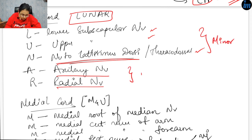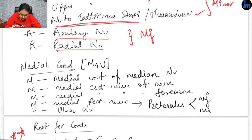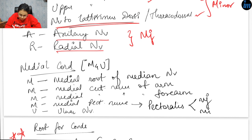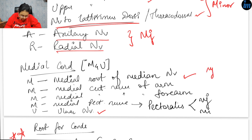From the medial cord, we get ulnar nerve, medial pectoral nerve, medial cutaneous nerve of the forearm, medial cutaneous nerve of the arm, and the medial root of the median nerve. So we get two major branches and three minor branches from the medial cord.